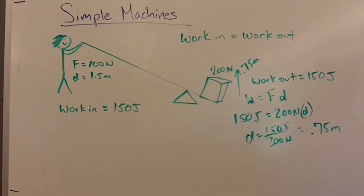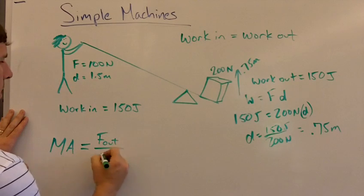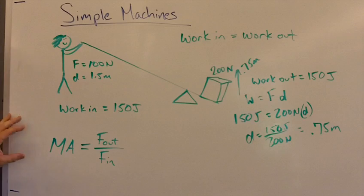Now, next question that I might ask would be, what's the mechanical advantage of this? Of course, mechanical advantage means how much more force did you get out of this machine than you put into it? So we say MA equals force out divided by force in.